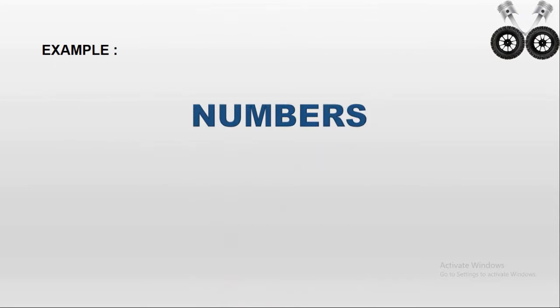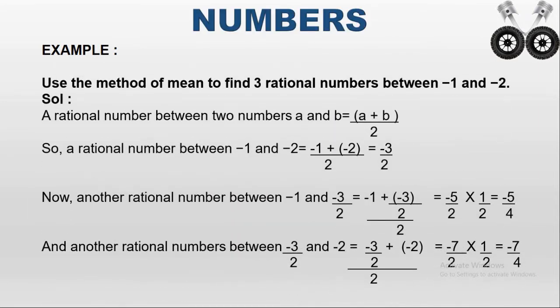For example: use the method of mean to find three rational numbers between minus one and minus two. Here they are given as a mean — mean means average. So using the average method, you are going to find three rational numbers between minus one and minus two. First we have to find the average of the given rational numbers.